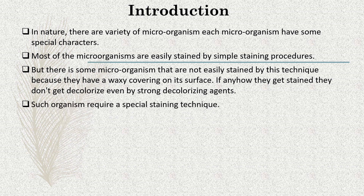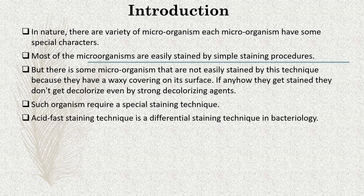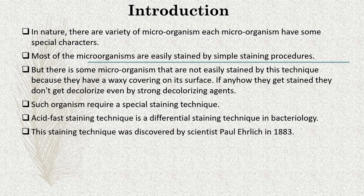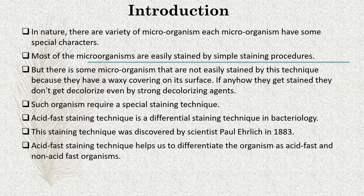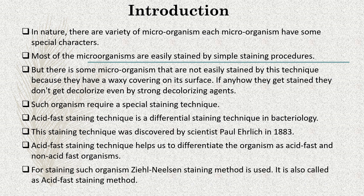Such organisms require a special staining technique. Acid-fast staining technique is a differential staining technique in bacteriology. The microorganisms which don't get easily stained by simple staining procedures are stained by using acid-fast staining technique. This technique was discovered by scientist Paul Ehrlich in 1883. Acid-fast staining helps us to differentiate organisms as acid-fast and non-acid-fast. For staining such organisms, Ziehl-Neelsen staining method is used, and this method is also called as acid-fast staining method.